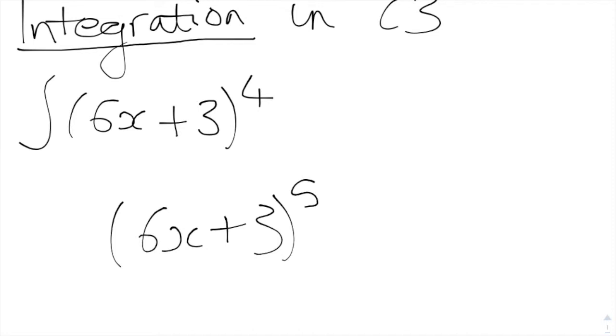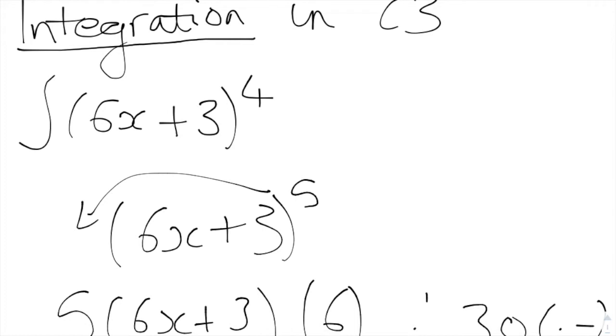Because when you're differentiating this, you'll be taking down your 5. So you'll be 5, 6x plus 3, and then it'll be this differential which will go to 6. Therefore it'll be 30, and that doesn't work. That's not what we want.